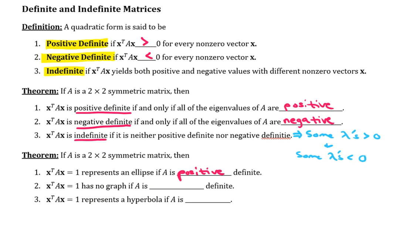In other words, if all the eigenvalues of the symmetric matrix A are positive, then we know in advance that the quadratic form that we're working with corresponds to an ellipse. In other words, X transpose AX equals one.